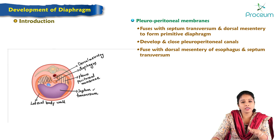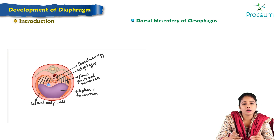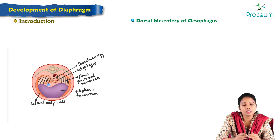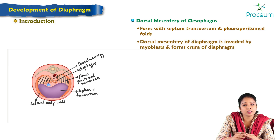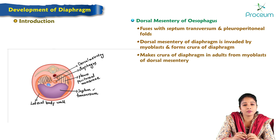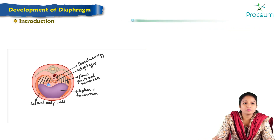The dorsal mesentery of the esophagus is the remnant of the dorsal connection between the foregut and the dorsal body wall after formation of the intraembryonic coelom. This mesentery fuses with the septum transversum and pleuroperitoneal folds. The dorsal mesentery of the diaphragm is invaded by myoblasts, which form the crura of the diaphragm. In adults, the crura of the diaphragm are derived from these myoblasts of the dorsal mesentery.